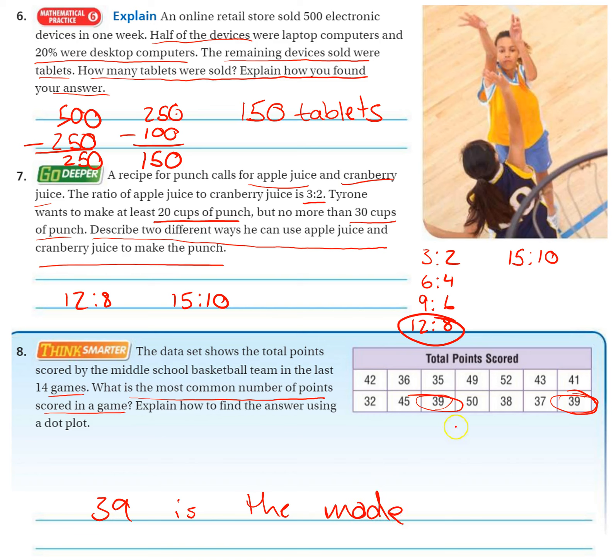So 39 is the mode. Now, this didn't have a lot of data points. There wasn't a ton of data. So I was able to just look closely at the data. But oftentimes, you're going to want to make a dot plot. But because this data was pretty spread out and there wasn't a lot of it, I'm able to just look closely at the data and find the number that comes up the most. Because there's only one number that comes up twice. All the other numbers only come up once. All right, thanks for watching and I'll see you on the next one.